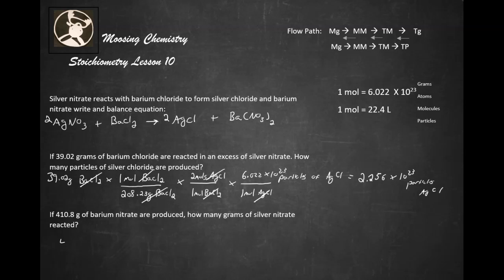All right. Let's go ahead and do this. So we've got 410.8 grams of barium nitrate. Okay. And we're going to multiply that by one mole of barium nitrate divided by the molar mass, which we calculated to be 261.35 grams of barium nitrate.